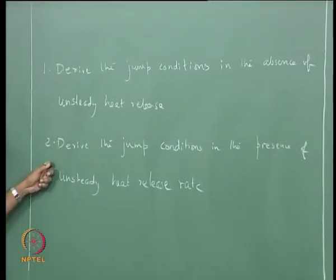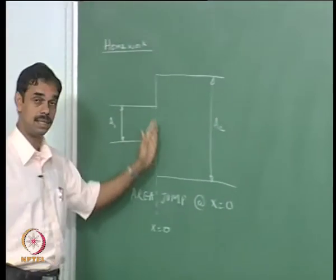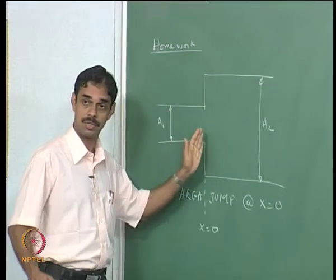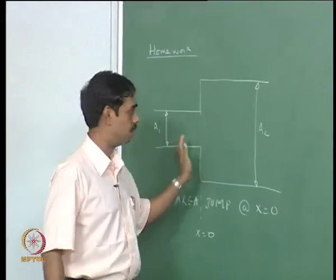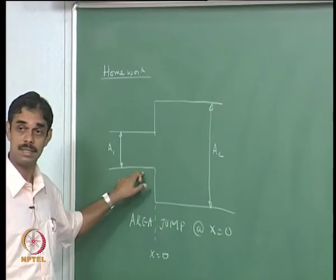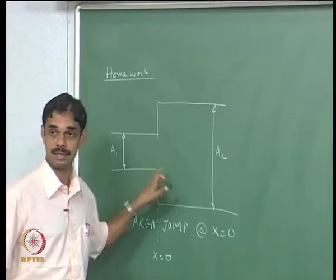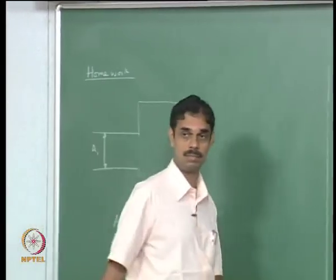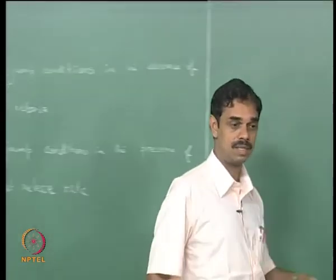The second problem: let us say for a moment that there is an unsteady heat release here, Q prime or Q dot prime. What would be the jump conditions in the presence of the unsteady heat release rate? That is the second question, very simple and straightforward.